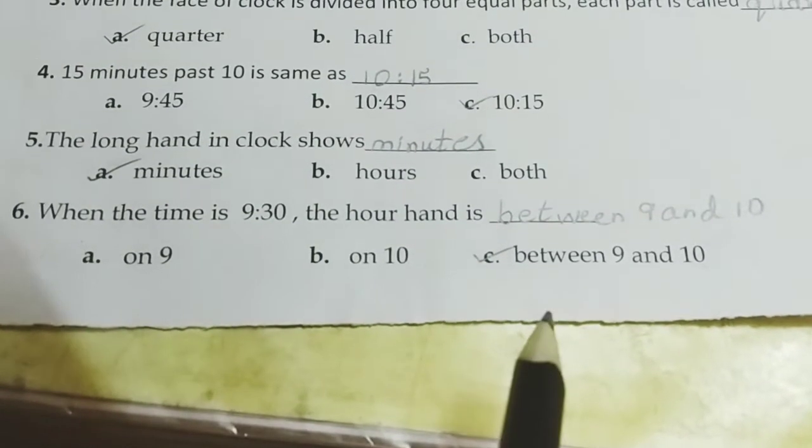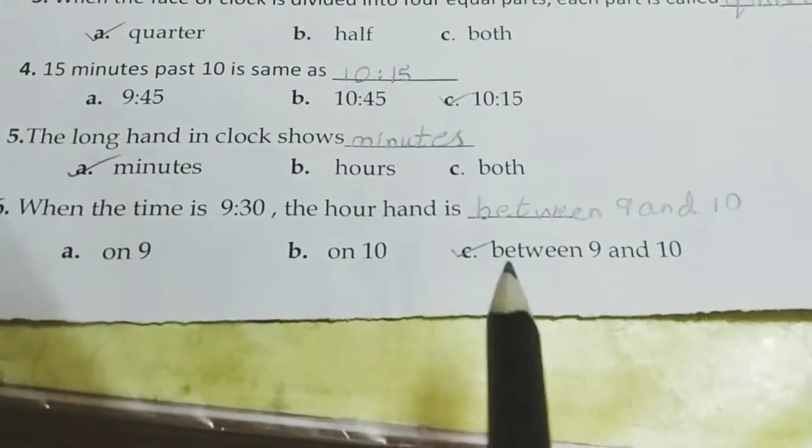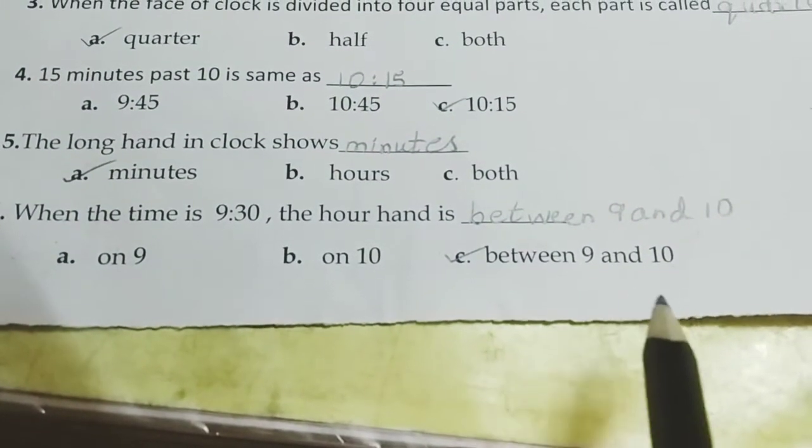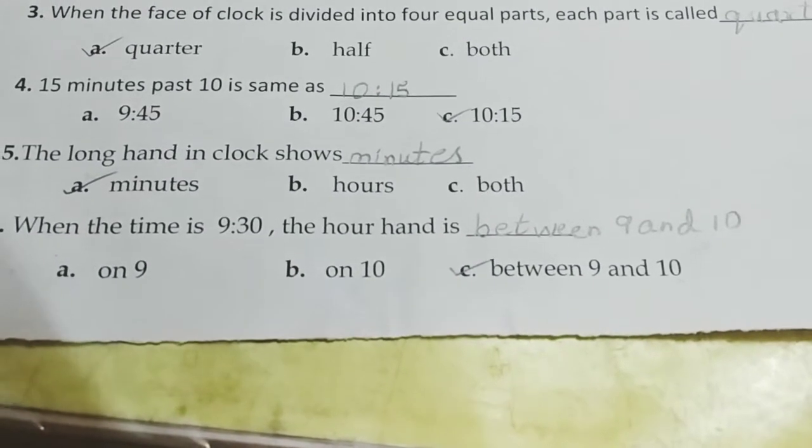After 9, 30 minutes is passed. Means the hour hand, it is in between 9 and 10. Between 9 and 10 is the right answer.